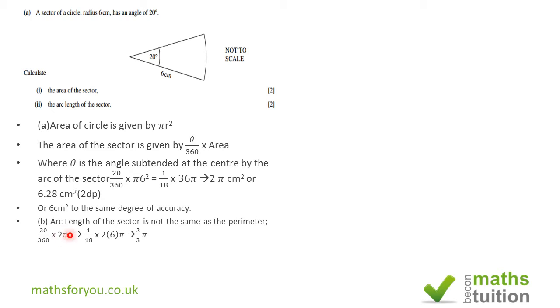We do 20 divided by 360 times 2πr, and 2πr is the formula for finding the circumference of the whole circle. The result is 2.09 or two centimeters to the same degree of accuracy.